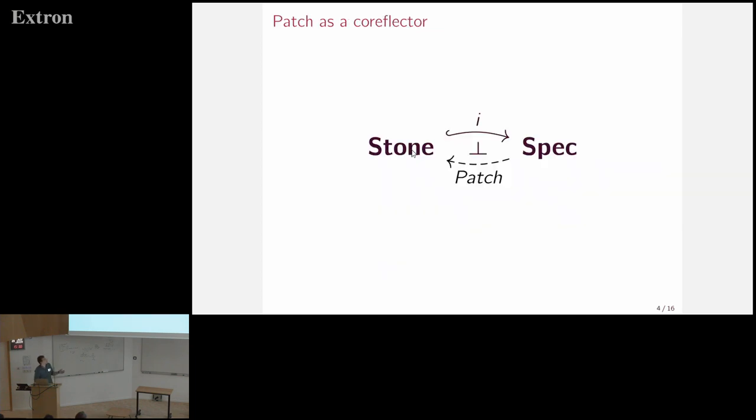And the picture of what I just described is this. So stone locales form a full subcategory of the category of spectral locales. And this is a core reflective subcategory. And the core reflector is the patch construction. It exhibits the category of stone locales as a core reflective subcategory of the category of spectral locales.